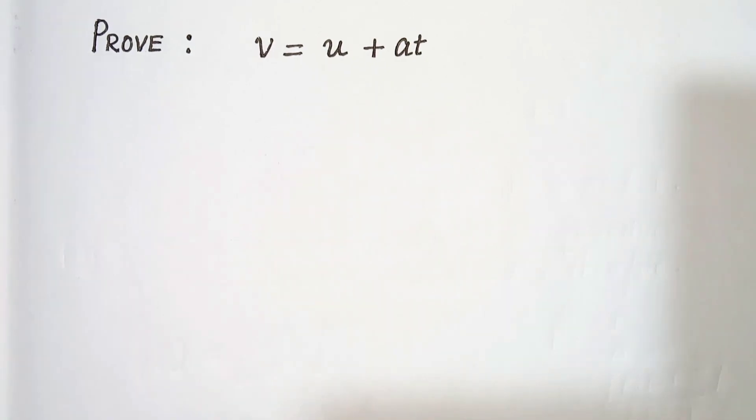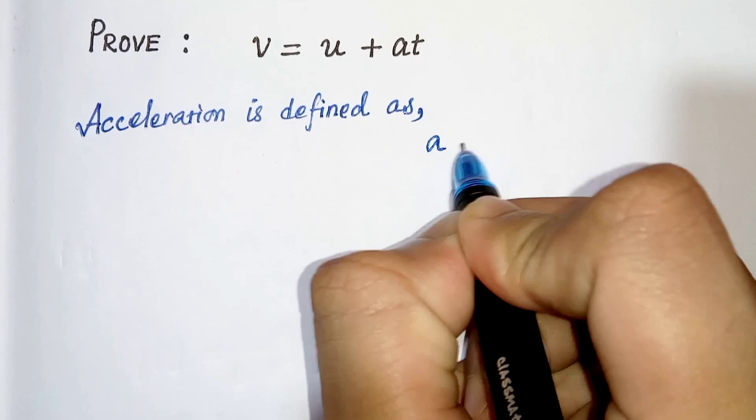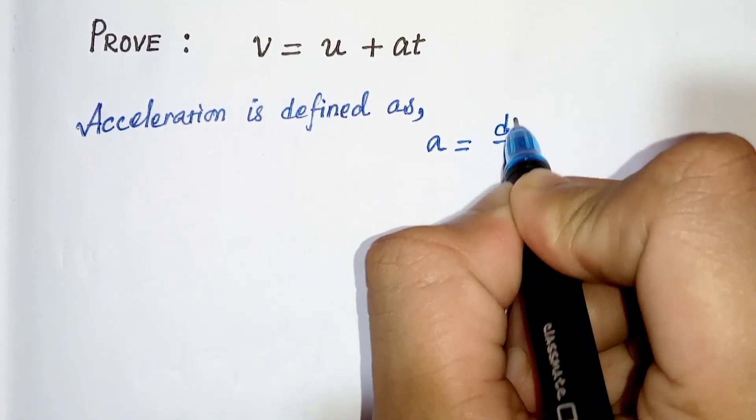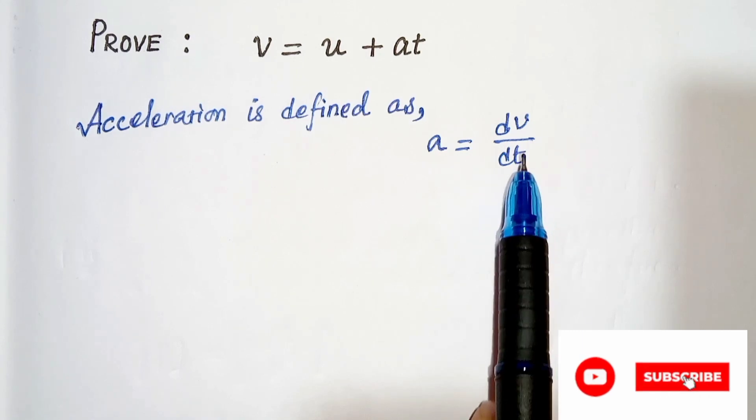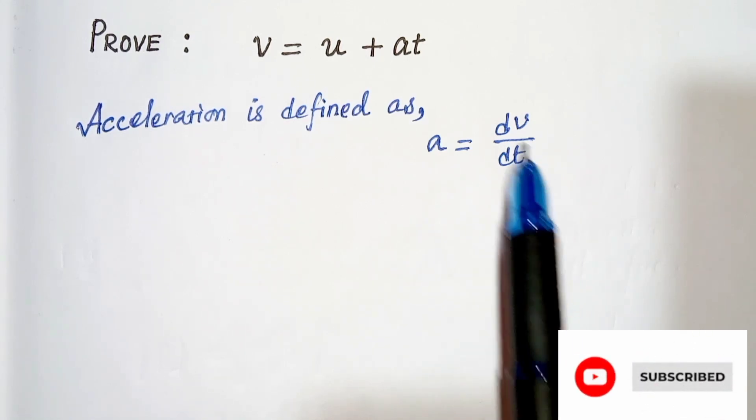Let's start. We know that acceleration is defined as a equals dv/dt, that is, differentiation of v with respect to time t, where v is the velocity.